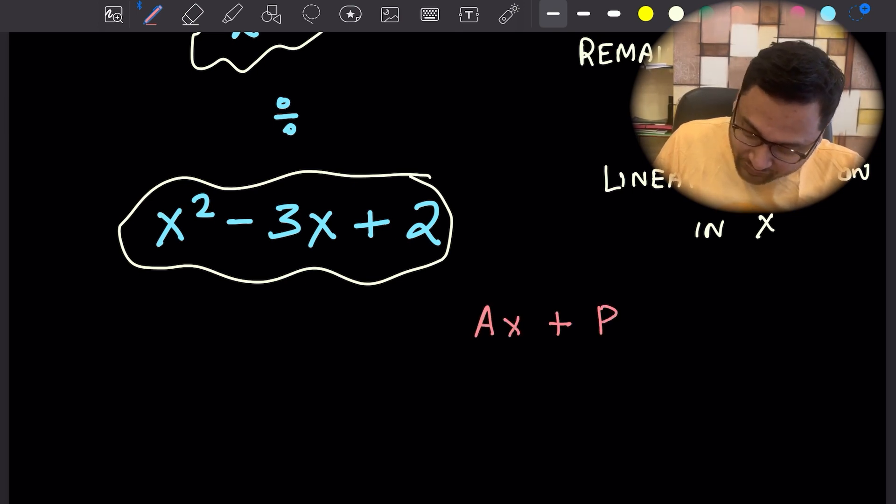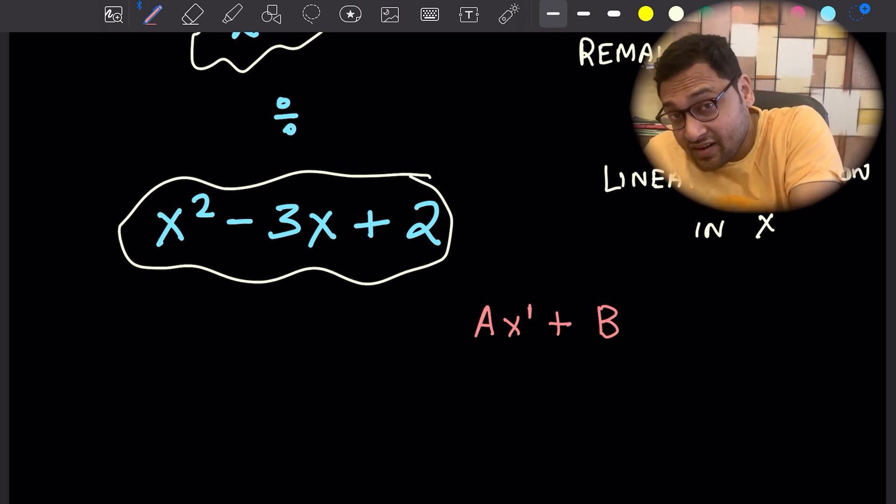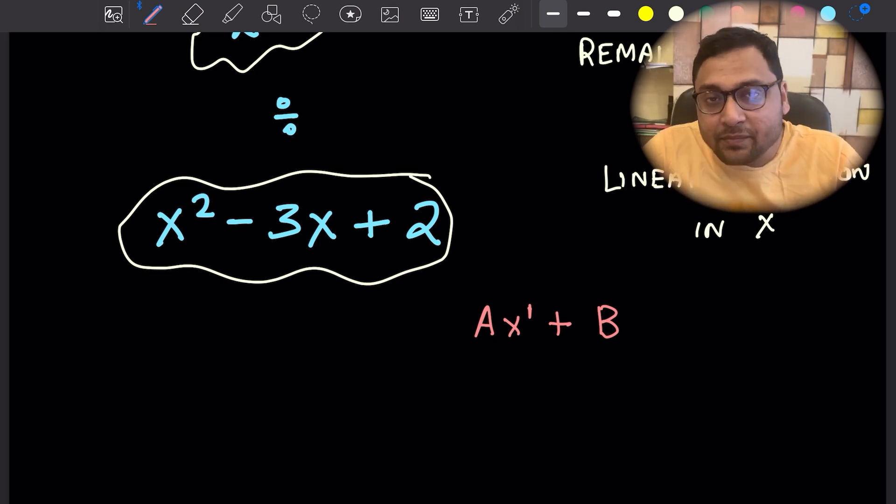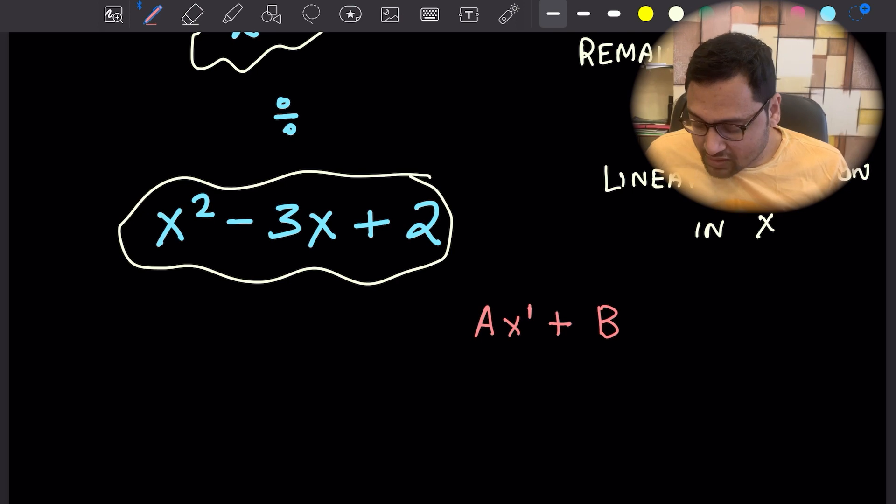The highest power of x in the remainder is x to the power 1. Why is that? Because if you had x squared or higher in the remainder, you could further divide it. Since you're dividing by a quadratic, if you have a power of 2 or more, you can again divide by that quadratic.